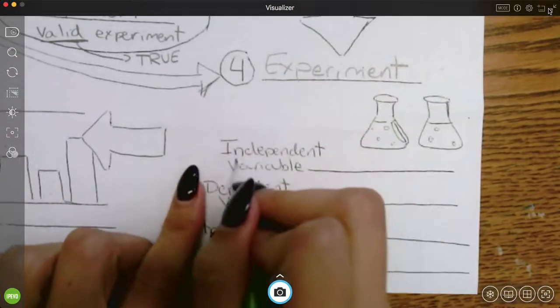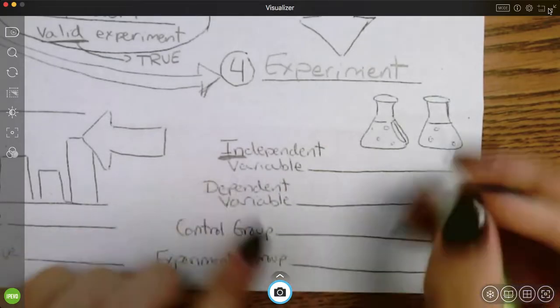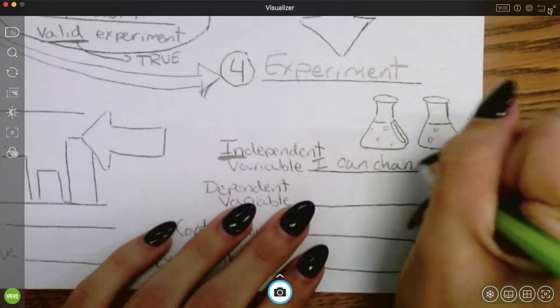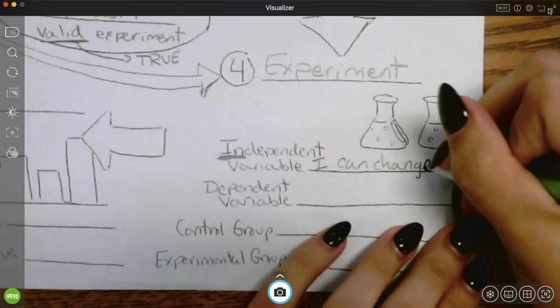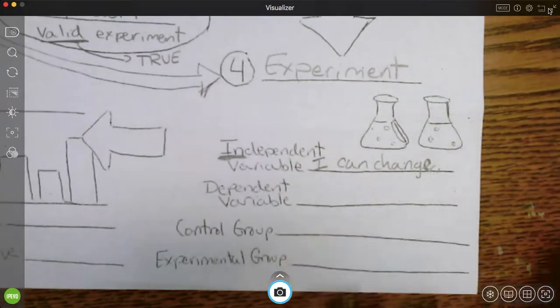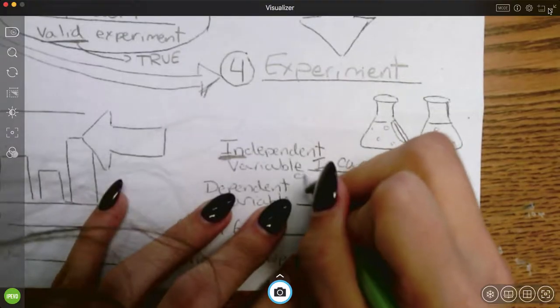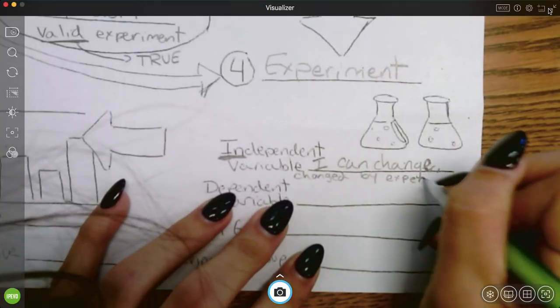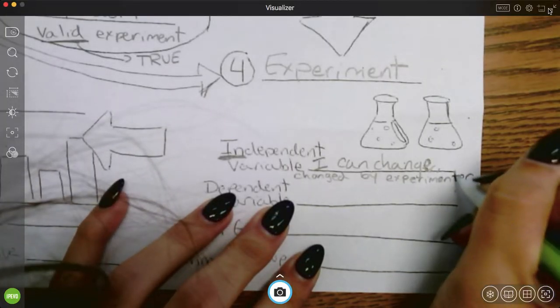So the independent variable. The independent variable. I can change the independent variable. It's what the experimenter changes. So with our music example, I can change what kind or if my friends listen to music when they study or not. I can take two of my friends and say, you go study with music. You go study without music. I can change it. So I'm going to also write down here, changed by experimenter. I can change it.